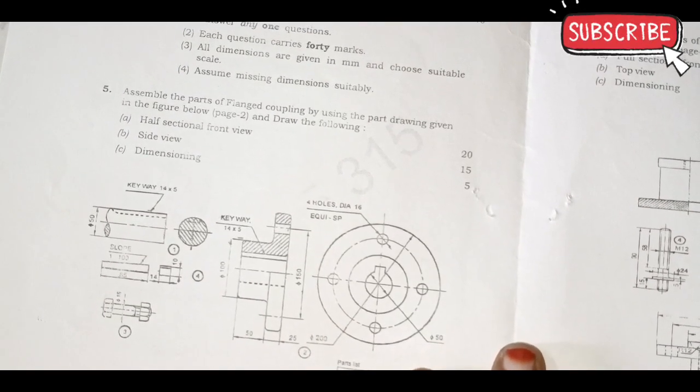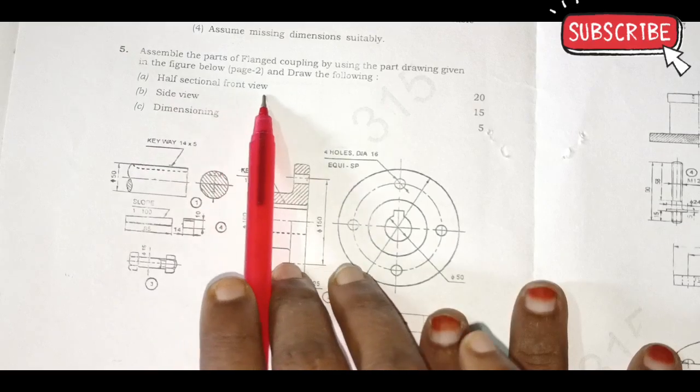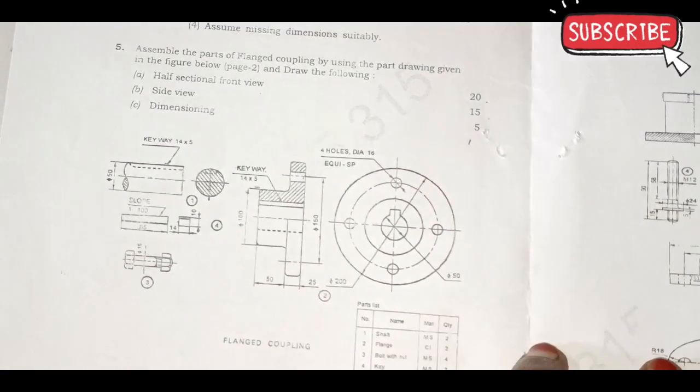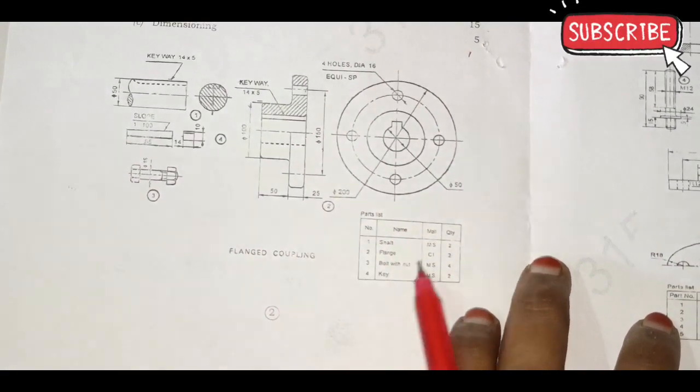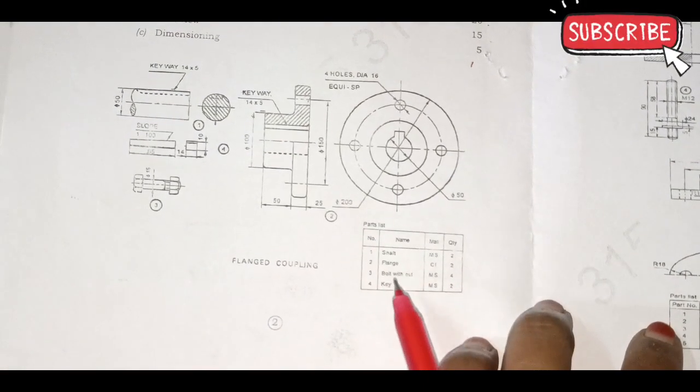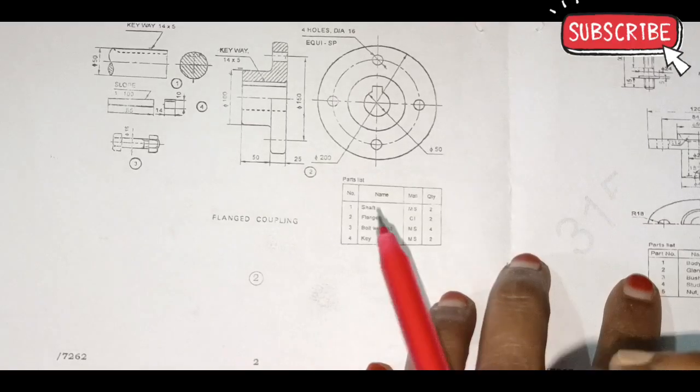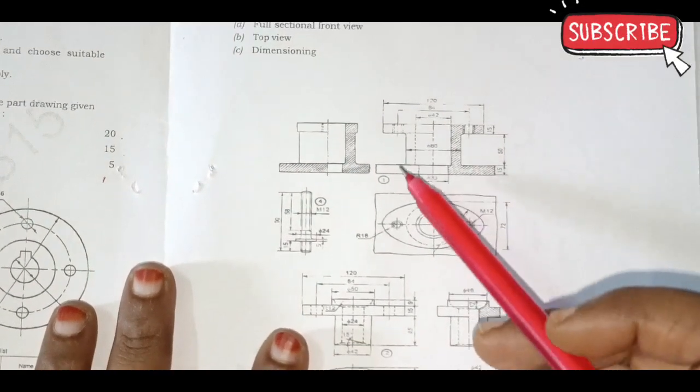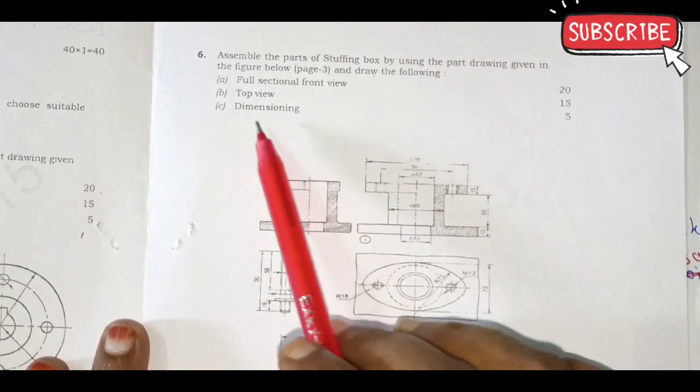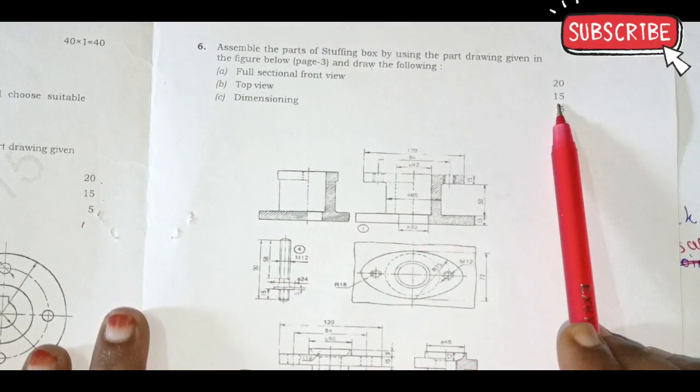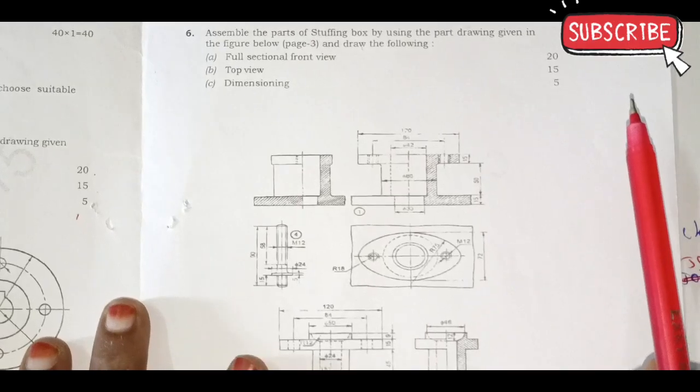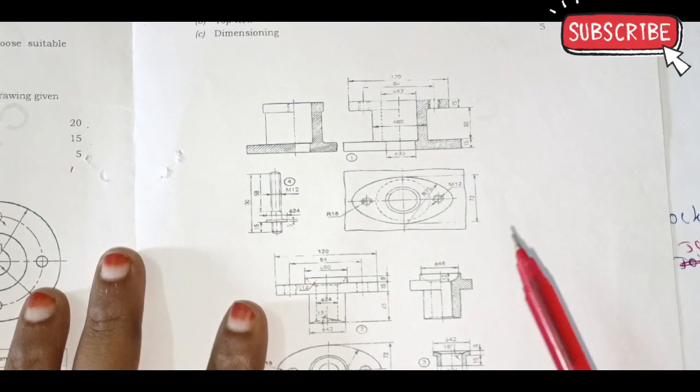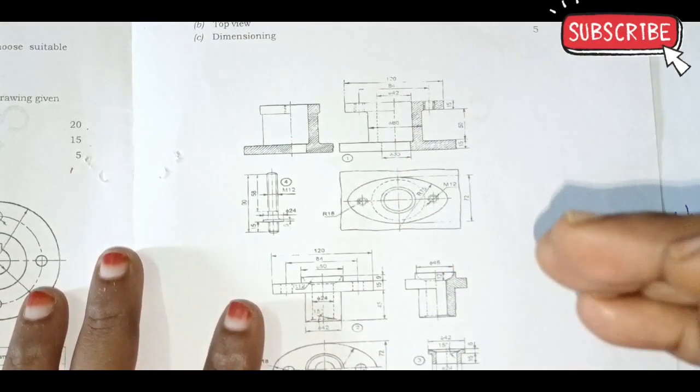Three sections: half section of front view, side view - fifteen marks. Dimensioning five marks. This is a parts list. Second option is stuffing box. Same: full sectional front view twenty marks, top view fifteen marks, dimensioning five marks. Parts list included. You can choose first part or second part. Just practice drawing.